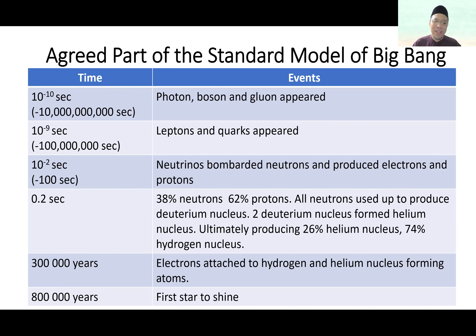So what happened before that — we will continue our discussion next week inshallah. We have covered the standard model of the Big Bang: from 10 to the power of minus 10 second, to 800,000 years — from the appearance of the first force particle to the appearance of the first star. That is the agreed part. Before that, it is a point of contention.